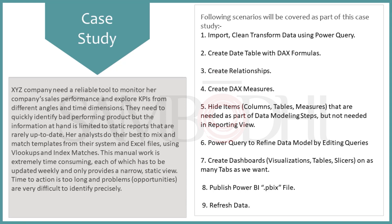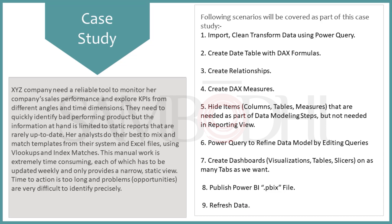What is the scenario? The company needed a reliable tool to monitor business sales performance and explore KPIs from different angles and time dimensions. They need to quickly identify bad-performing products, but the information at hand is limited. Static reports are rarely up to date. Analysts do their best to mix and match templates from their systems and Excel files using VLOOKUP and index-match. The manual work is extremely time-consuming, has to be updated weekly, and only provides a narrow static view. Time to action is too long and problematic, and opportunities are very difficult to identify precisely.